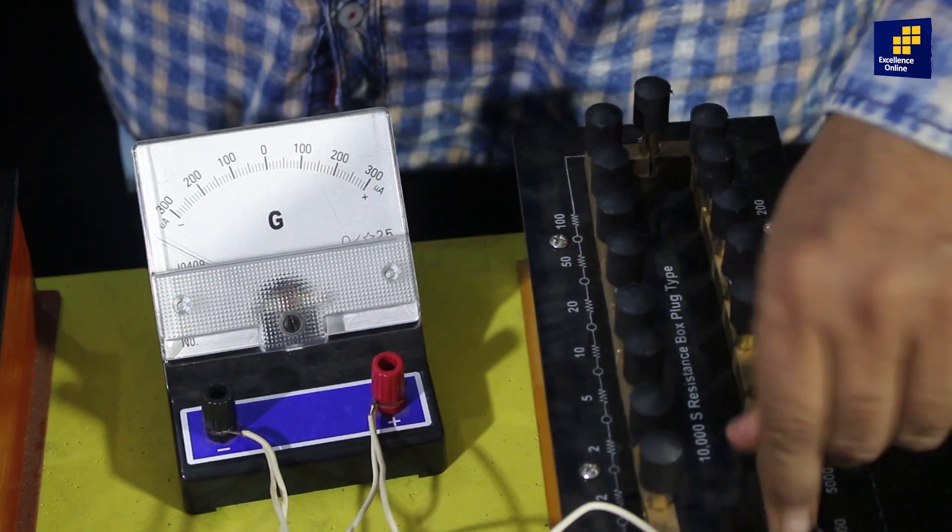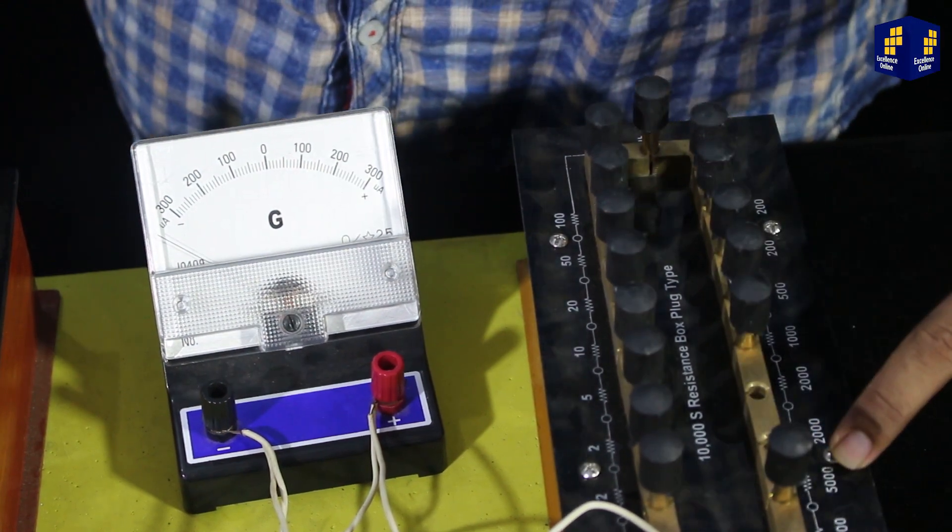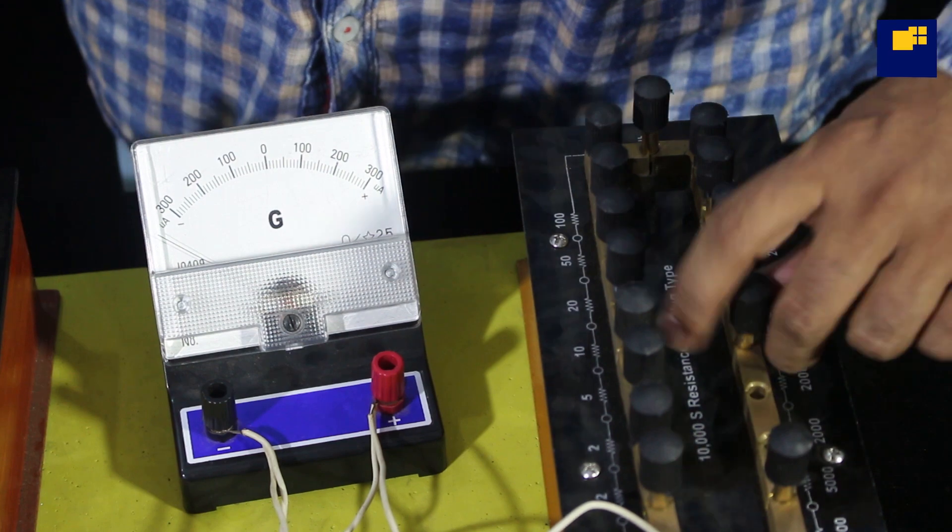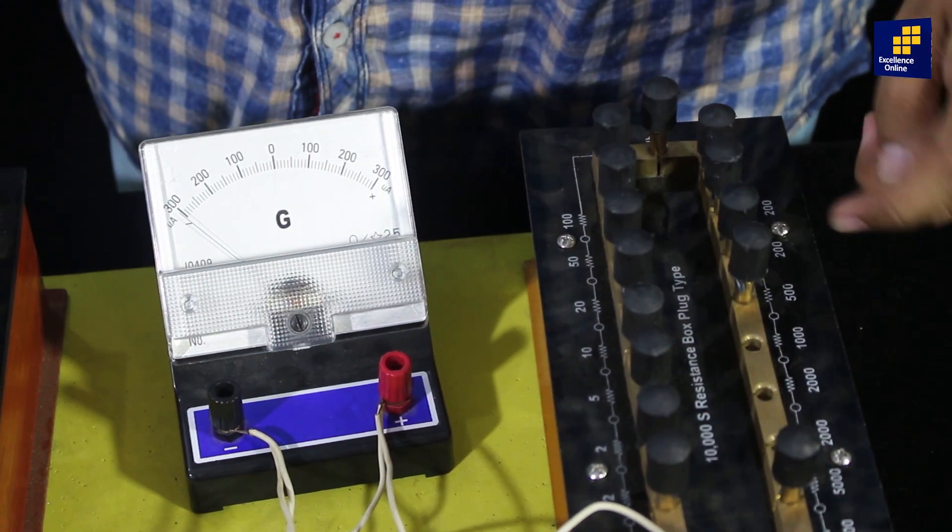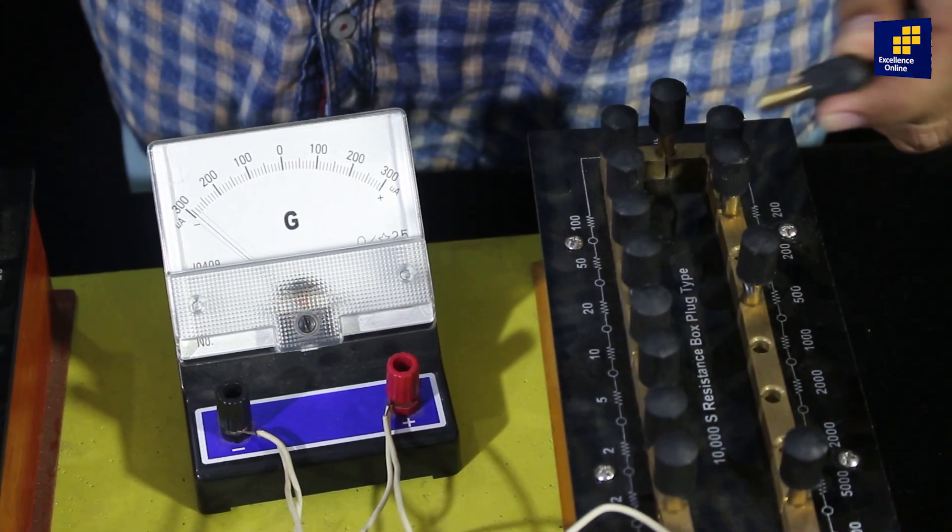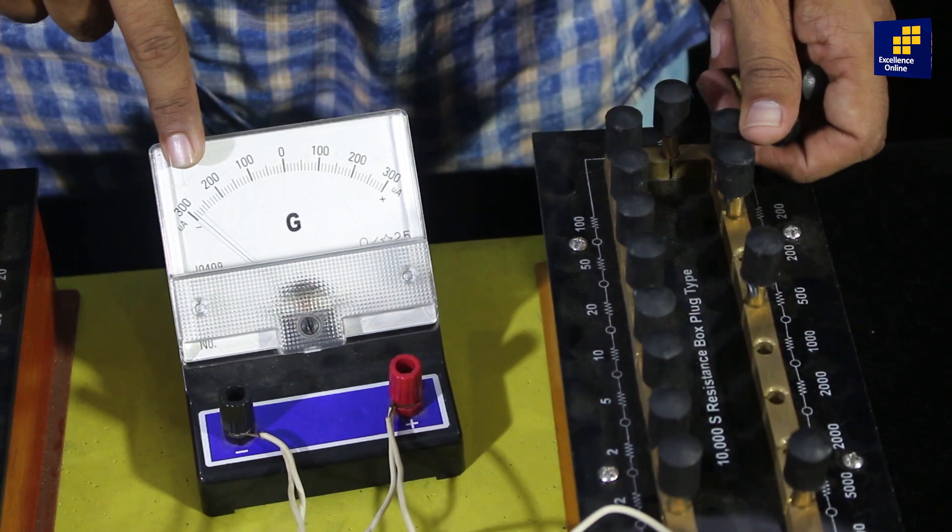यह ज्यादा चला गया, तो अब हम इसको hit and trial पर, मैंने 5000 ohm remove किया, further 2000 ohm remove किया, फिर 2000 ohm remove किया, और यहाँ से मैंने 500 ohm remove किया, तो comes to 30 degree deflection.